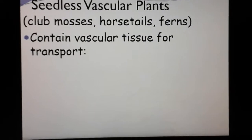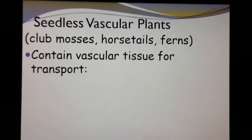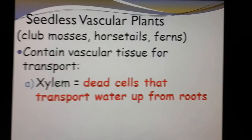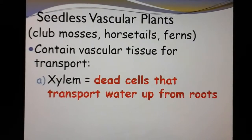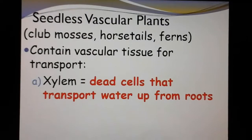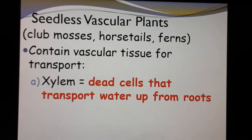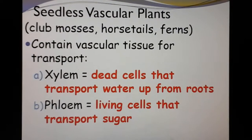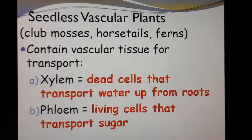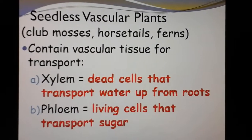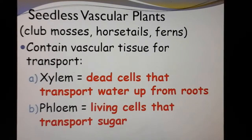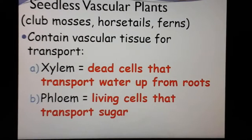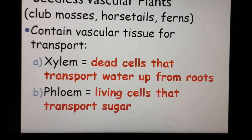Most of you have seen ferns before. They do contain vascular tissue — tubes like our blood vessels, though they don't have blood. They have xylem — tubes made from dead cells that transport water up from the roots. They have to be dead so they don't use up all the water. And then phloem — living cells that transport the sugar. Phloem have to be alive because sugar is so big, those cells have to be alive to move sugar around. Xylem would be like our veins moving up, and phloem would be like our arteries carrying stuff down. Xylem moves water up; phloem moves sugar down.